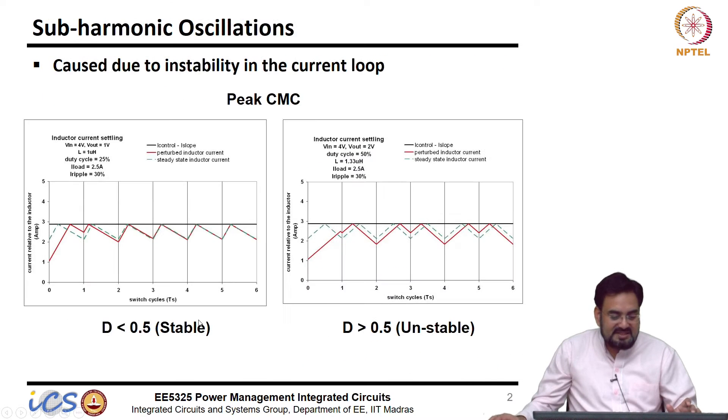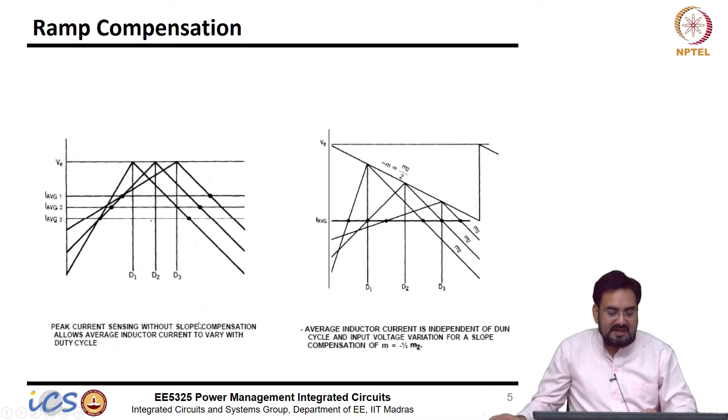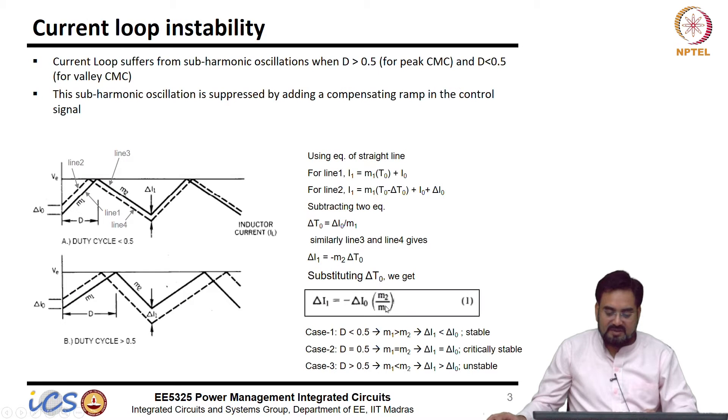So, I know this is the sensed current, if you remember I was sensing the current and in order to change the slope and if I want to increase this, which means either decrease M2 or increase M1 and M2 is the falling.